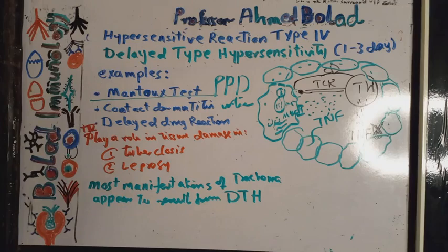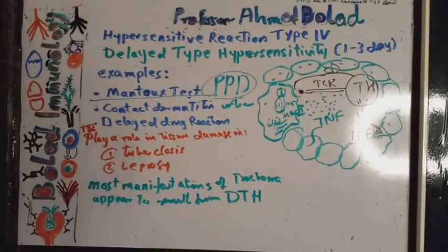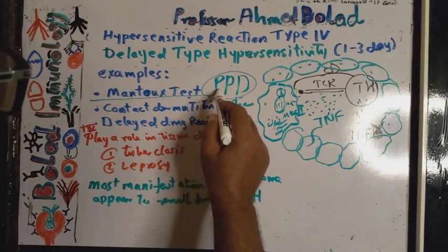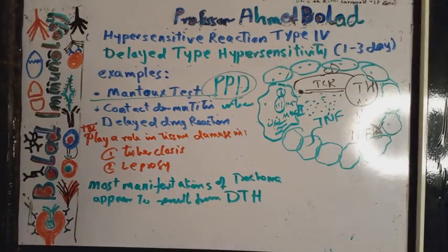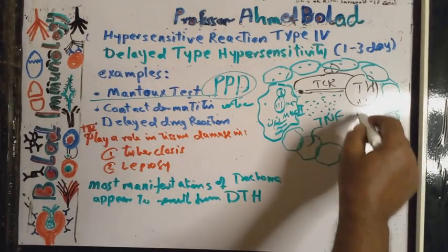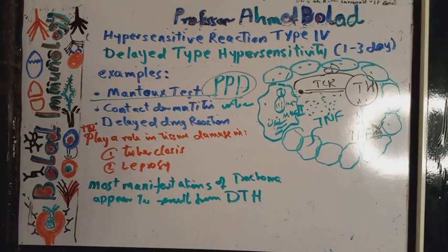If there is a delayed type response, this will be seen as an indurative area, meaning that the patient is infected and sensitized. In the Mantoux test, the purified protein derivative is derived from Mycobacterium tuberculosis. When injected into the forearm, an antigen-presenting cell engulfs the antigen and presents it to a T helper cell, which produces interferon gamma that recruits more macrophages to the area, leading to a localized granuloma.